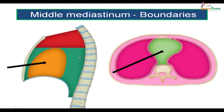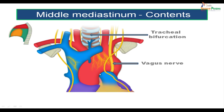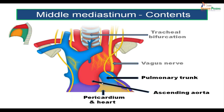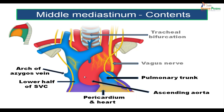The middle mediastinum is bounded by the pericardium and its contents. It contains the heart and pericardium, along with the ascending aorta, pulmonary trunk, and the intrapericardial part of the superior vena cava. Just before becoming intrapericardial, the SVC receives the arch of the azygous vein, so that is not a content of the middle mediastinum. The middle mediastinum is also associated with the phrenic nerve and pericardiacophrenic vessels, which supply the diaphragm and pericardium.